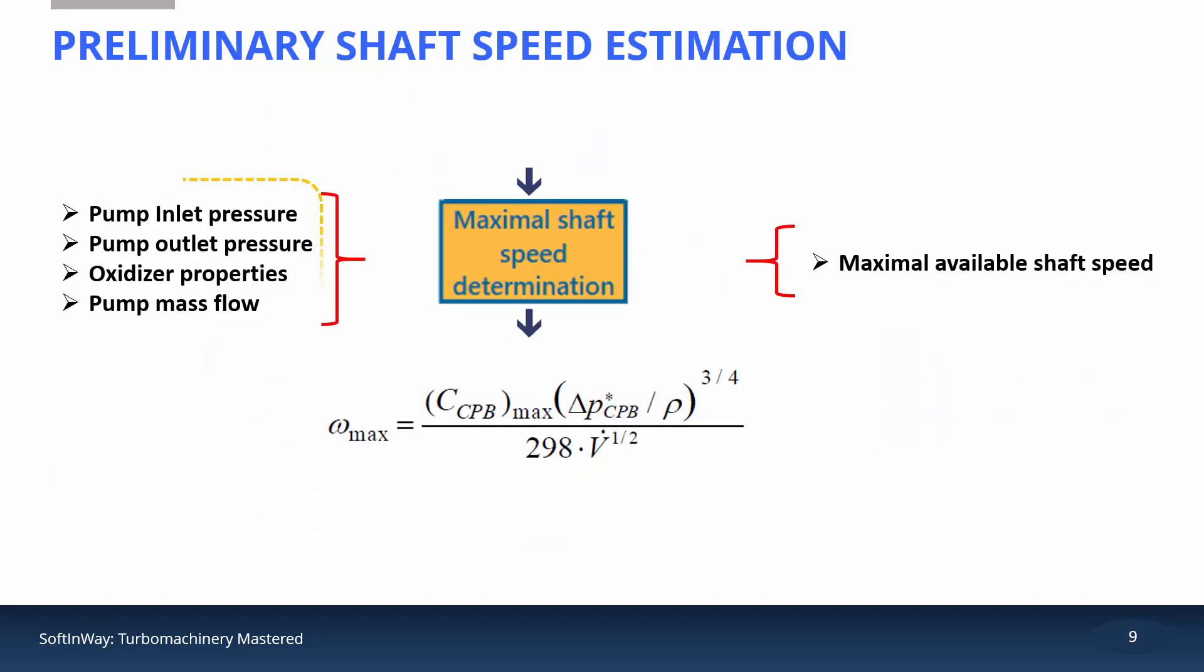Having the thermodynamic information about off-design modes, the turbopump maximal available shaft rotational speed that satisfies the absence of cavitation is calculated. The methodology of this shaft speed determination is based on the pump inlet and outlet pressures, component properties, and the mass flow rate.